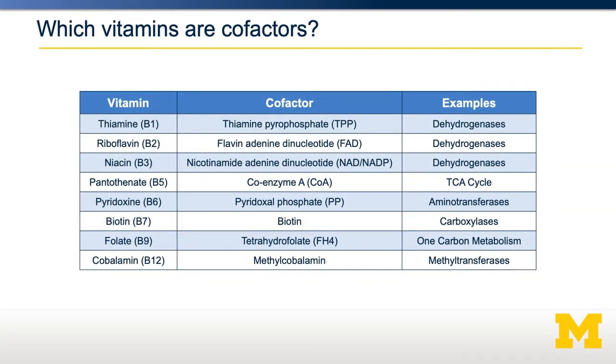Which vitamins are cofactors? There are a large number of minerals that can serve as cofactors, such as iron and zinc, but those will be covered in a different video. In this video, we're going to focus on vitamin-dependent cofactors. A large number of B vitamins can be converted into chemicals that serve as cofactors. FAD comes from riboflavin, or vitamin B2, and is converted in our bodies to flavin adenine dinucleotide, which is critical for certain dehydrogenases such as succinate dehydrogenase. Another example is thiamine, which is converted to thiamine pyrophosphate, a cofactor for another class of enzymes.